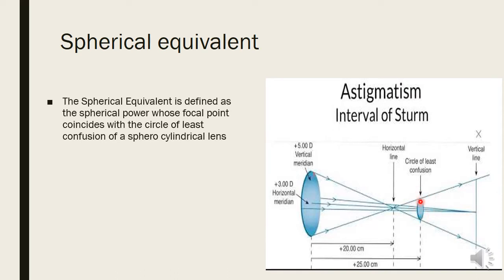This is what spherical equivalent represents. If due to some urgency I can't give the patient plus three with a plus two cylinder and need to give an urgent spherical lens, there can be a spherical equivalent somewhere between these two numbers. It is essentially an averaging method.